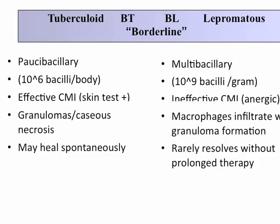In terms of the spectral manifestations of leprosy: paucibacillary means not having a lot of bacteria in the skin — these patients have maybe 10 million bacilli per body. This is really part of the tuberculoid range because they don't have many bacteria. They have effective cell-mediated immunity, give a nice positive skin test with dead leprosy bacilli, have granulomas with caseous necrosis, and may heal spontaneously. Unfortunately, these are also the conditions that can cause the nerves to die.